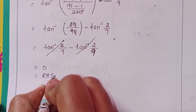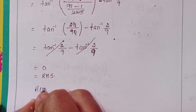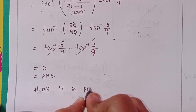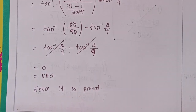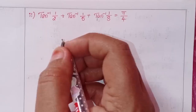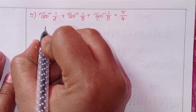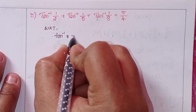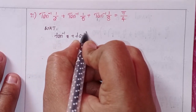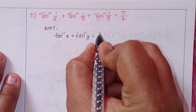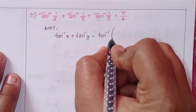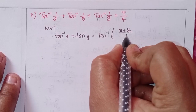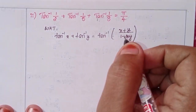This is RHS. First one is complete, hence it is proved. For the second one, same formula applies: tan inverse x plus tan inverse y equals tan inverse of x plus y by 1 minus x into y.